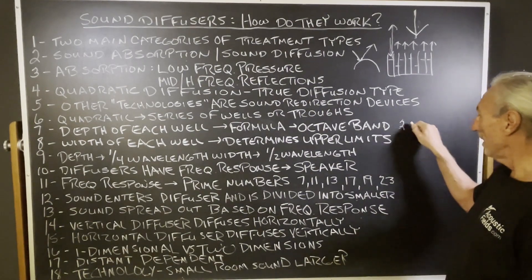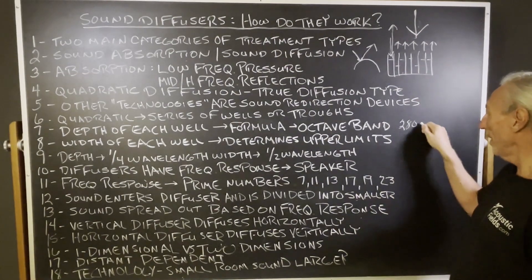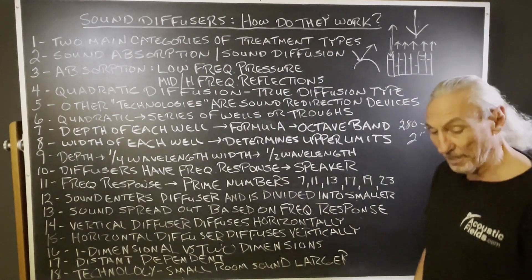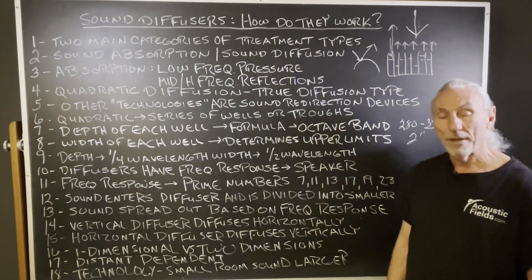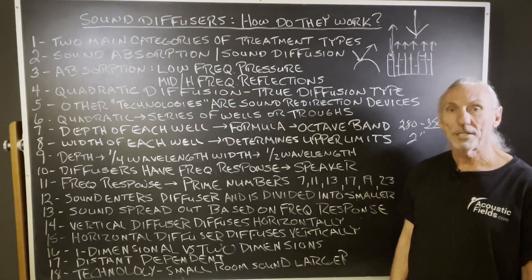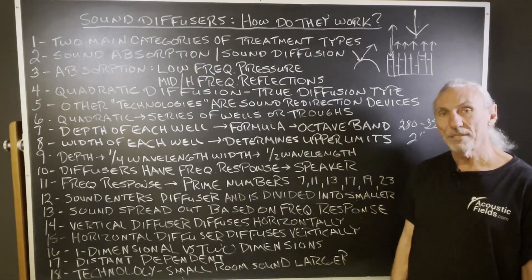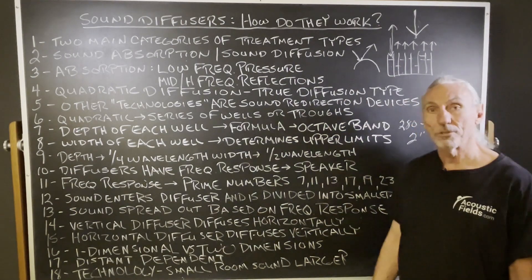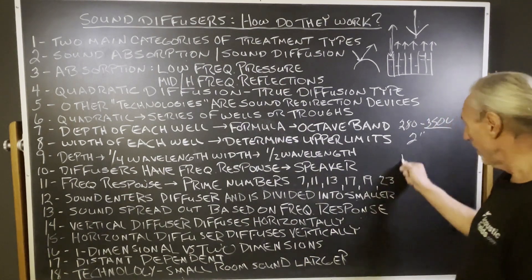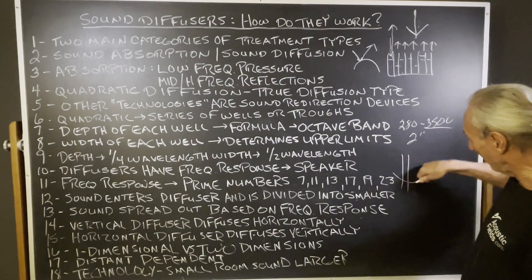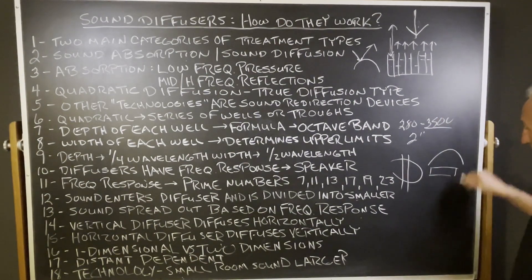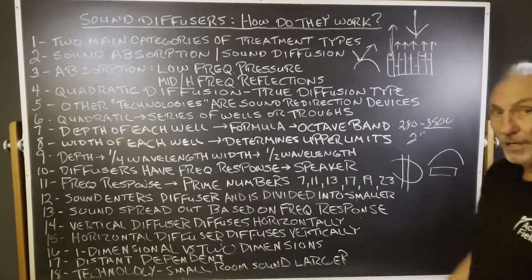A prime 13 diffuser has a lowest frequency of around 280 Hz and up to about 3,500 Hz for the highest. We use two-inch well width because that gets us the 3,500 Hz ceiling. You can go smaller than that and extend the frequency response higher, but when the wells are one inch apart, it's hard for workers to get their fingers in to secure all the pieces — a prime 13 diffuser has about 90 pieces. A vertical diffuser, placed vertically, diffuses sound in a horizontal direction.